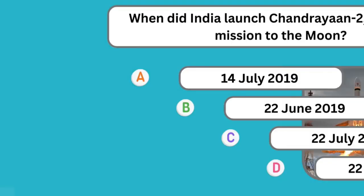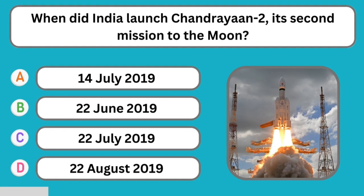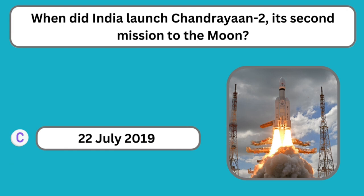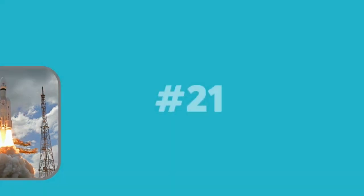Question number twenty: When did India launch Chandrayaan 2, its second mission to the moon? The correct answer is 22nd July 2019.